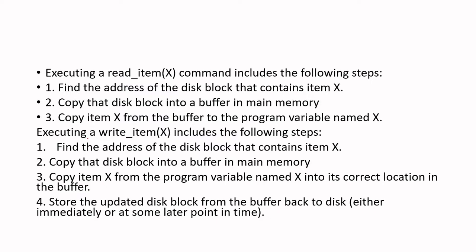What happens when we execute read_item(X)? First, we find the address of the disk block that contains item X. Then we copy that whole disk block into a buffer in main memory — even if you simply want to read a single attribute value, every database transaction involves a disk block. We first identify the address and then copy the disk block which contains the particular data item.